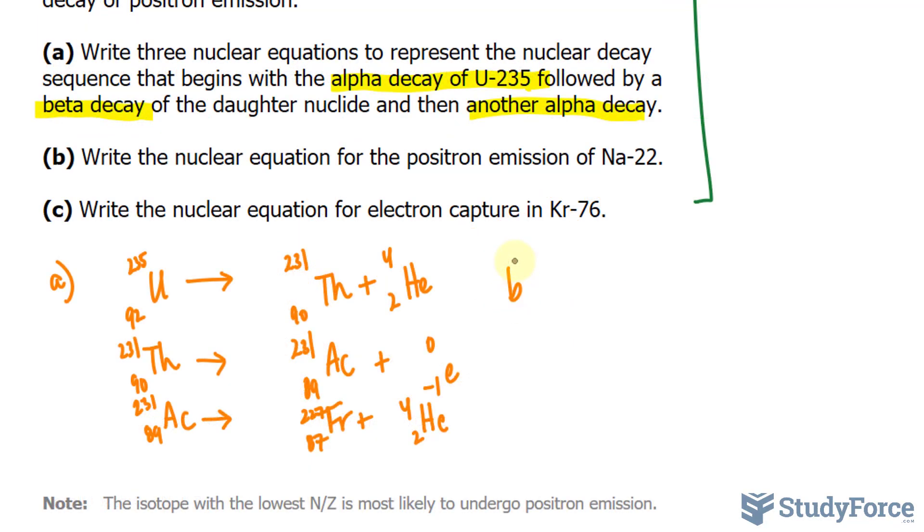In question B, they want us to write the nuclear equation for the positron emission of Na-22. So we have an atomic mass of 22, sodium, and it has 11 protons. In a positron emission, the nucleus of an atom releases a positron, which is equivalent to an electron but positive. It's losing a proton. It becomes 10. The mass stays the way it is. And we represent the decay as E, positive 1, and its mass is 0.